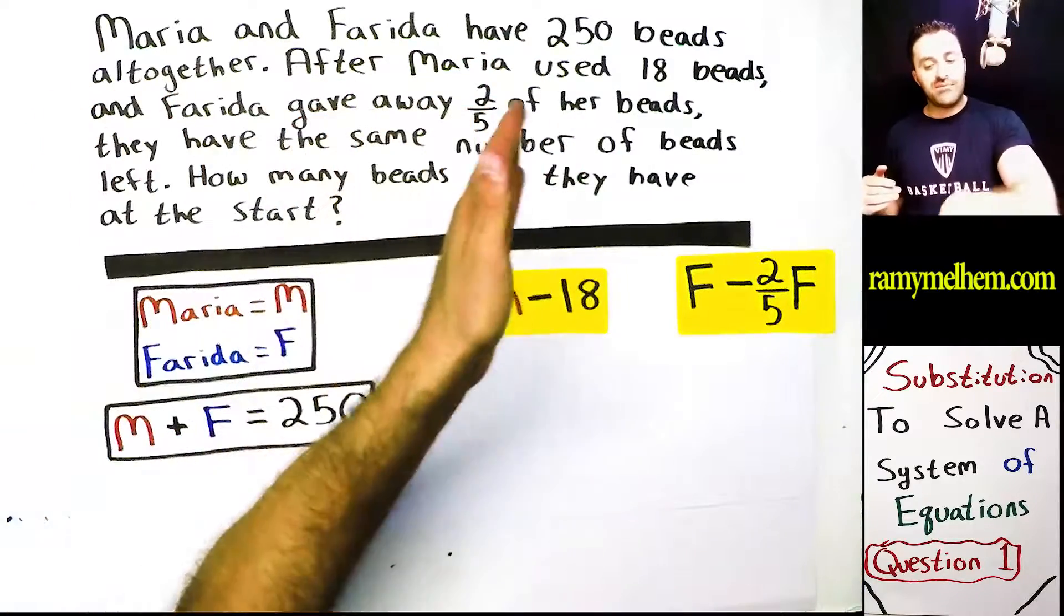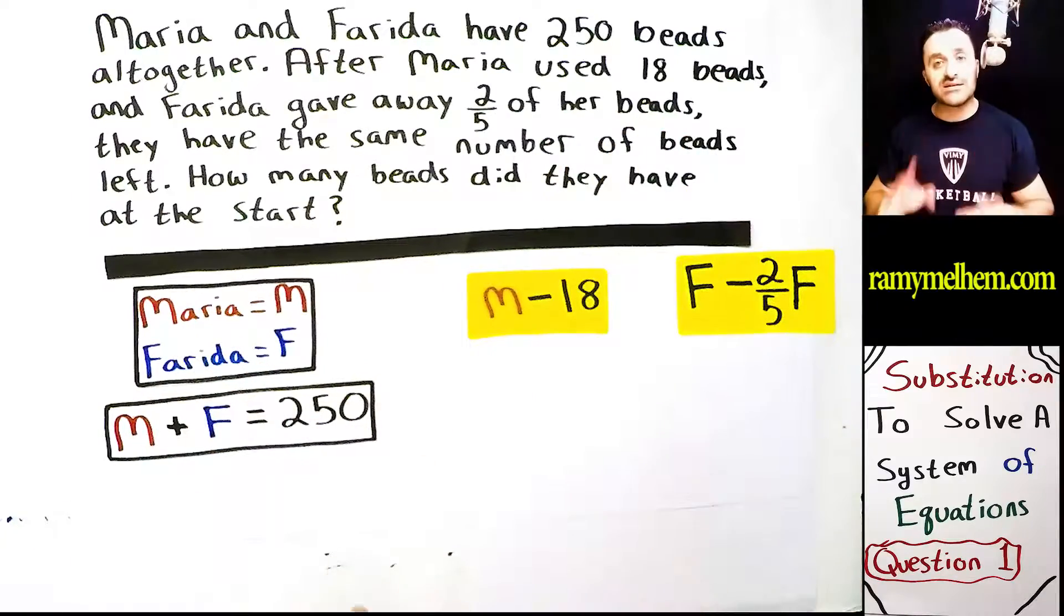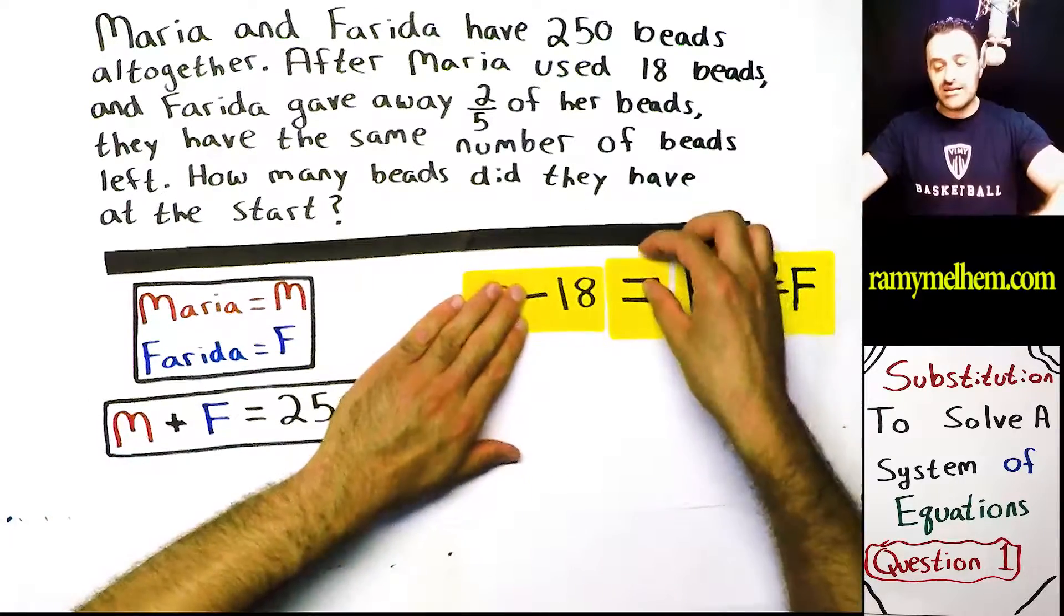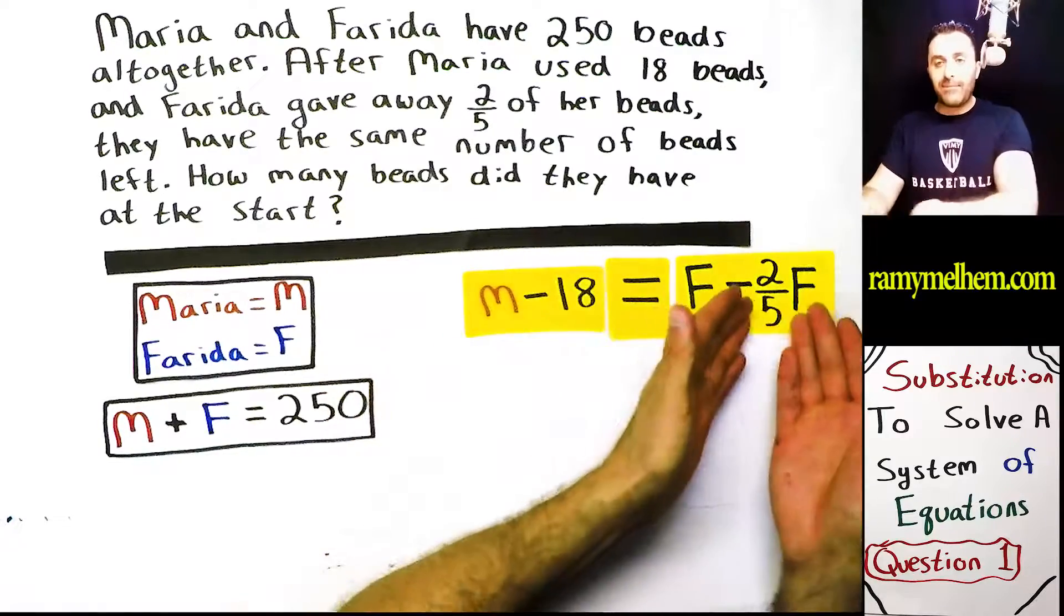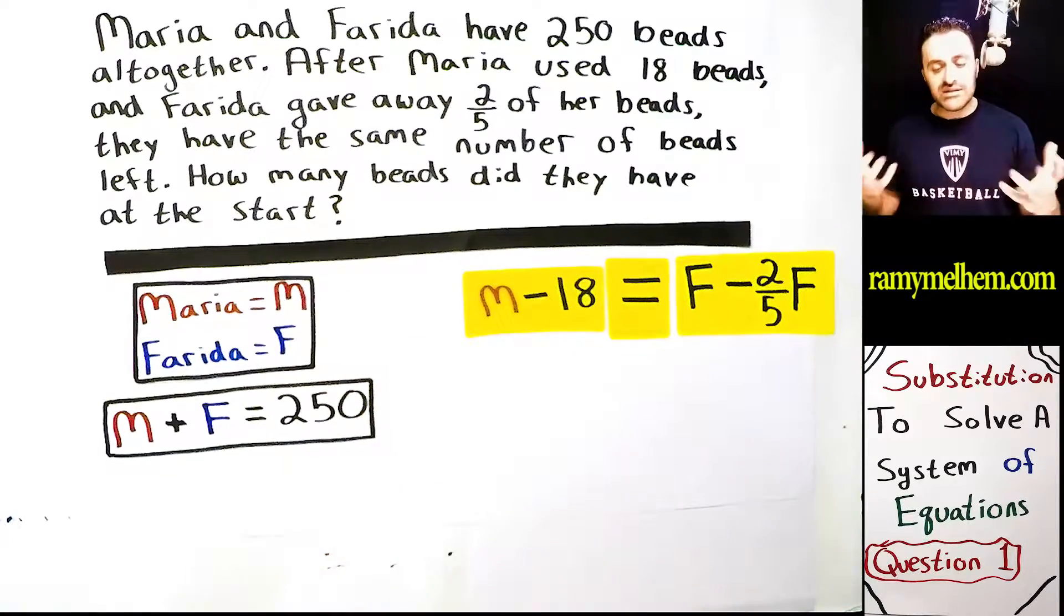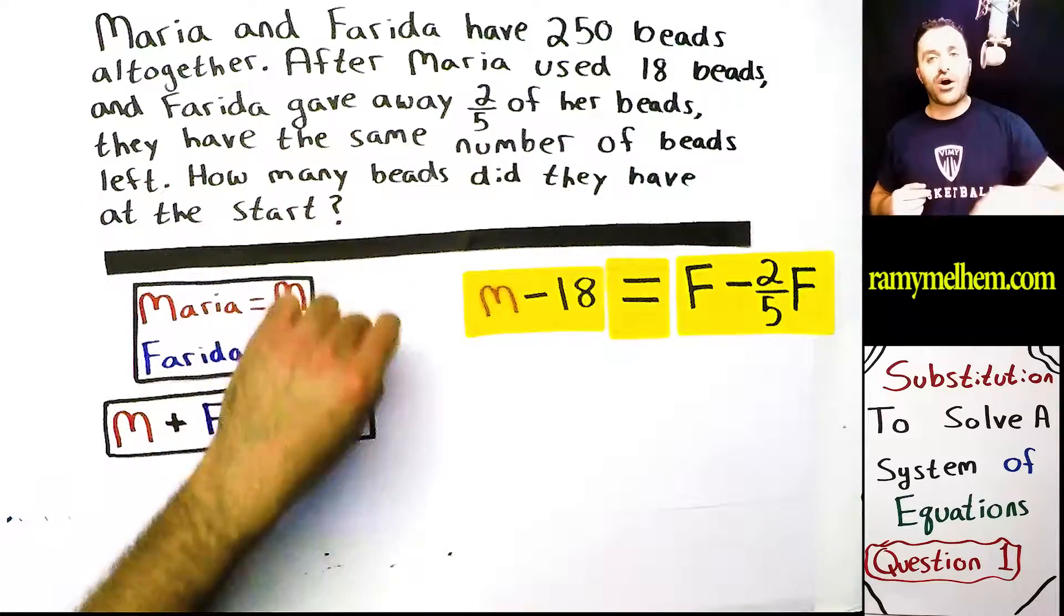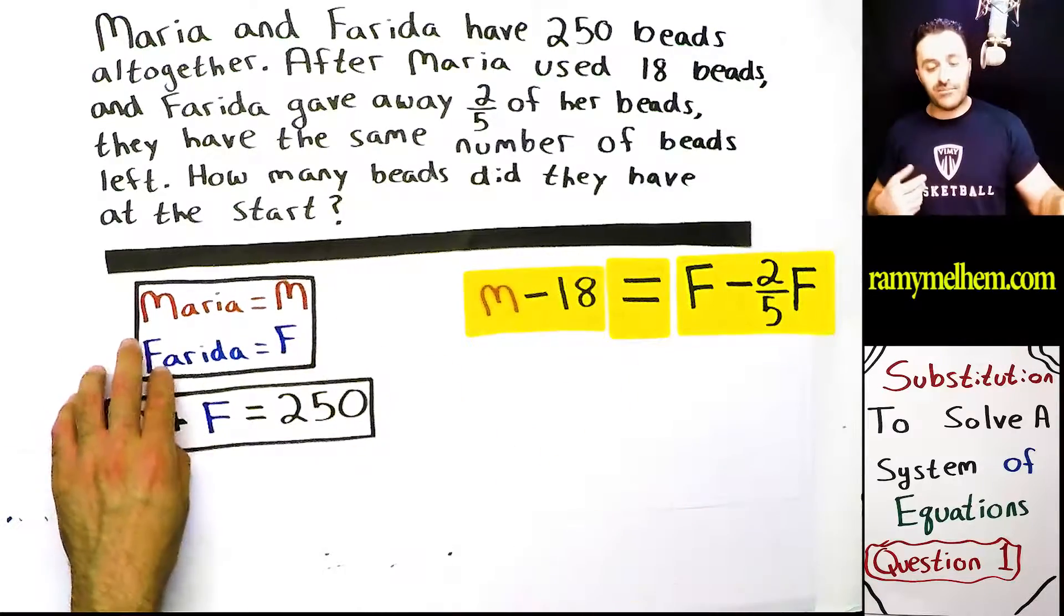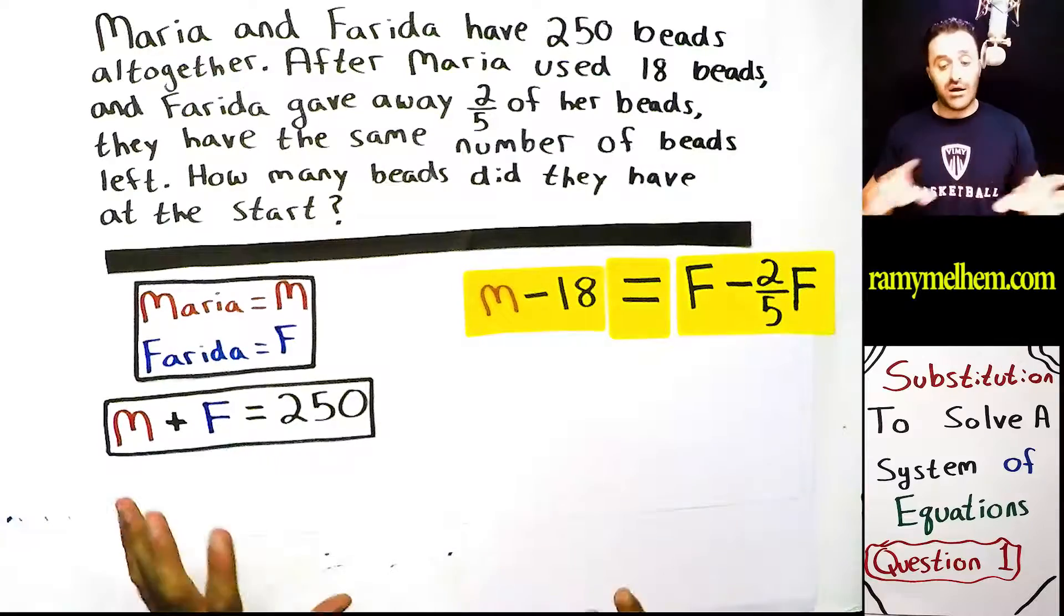Let's finish the story. They have the same number of beads. Who? Maria and Farida have the same number of beads. So here's Maria's side. Here's Farida's side. Make them equal. They're the same number once this stuff happens. What's the rest of it say? How many beads did they have at the start? At the start, they had M and they had F. That's at the start. The problem is, I don't know how much that is.